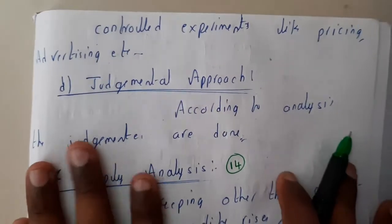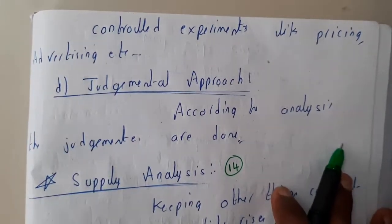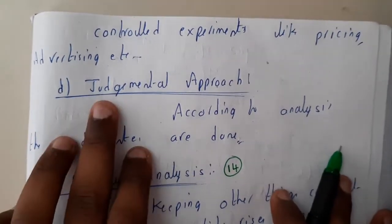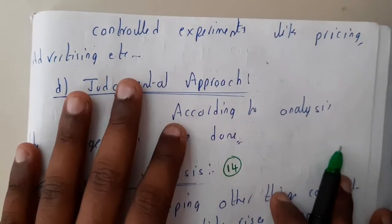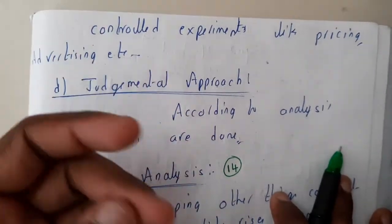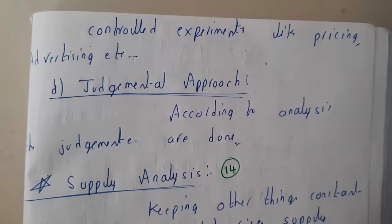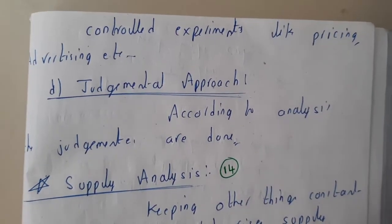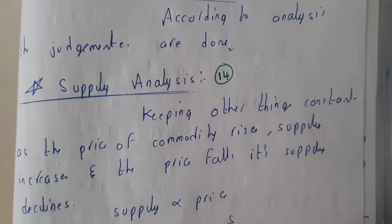The next method is the judgmental approach — just by observing, someone will judge that in the future this will be in loss, this will be in profit, you'll be getting this much profit or this much loss. I hope everyone got a small idea on this. In the next lecture, we'll be going through supply analysis. Thank you, thanks for watching.